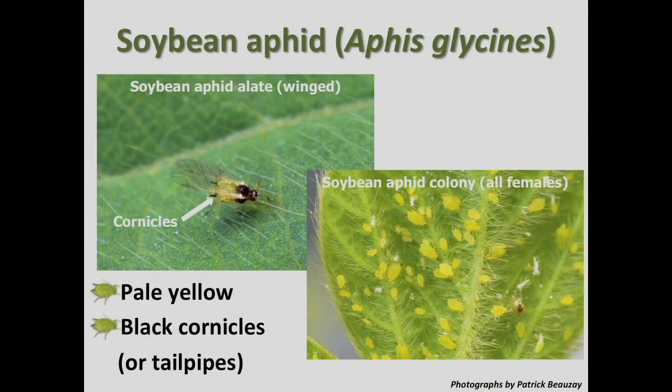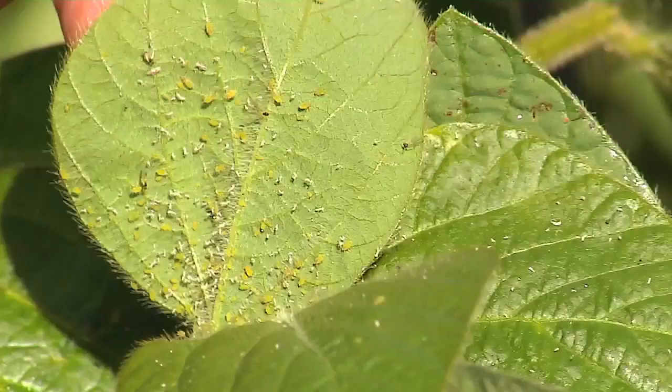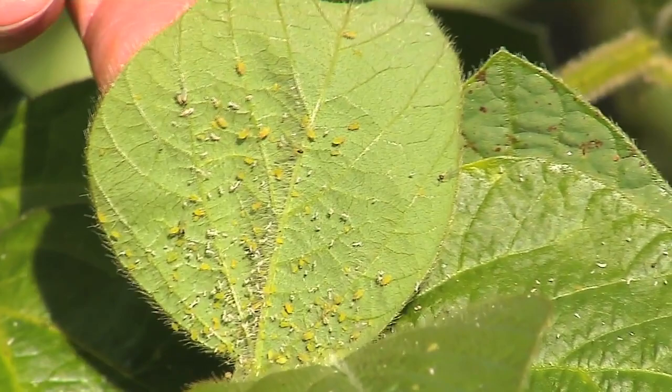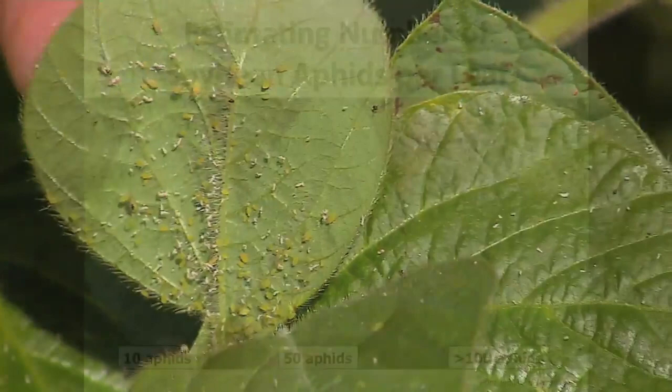They may be winged or wingless. Because they're so small, you can estimate the number of aphids once you have an idea of how many aphids look like for 10 aphids, 50 aphids, and 100 aphids per leaf, and then you can estimate them.